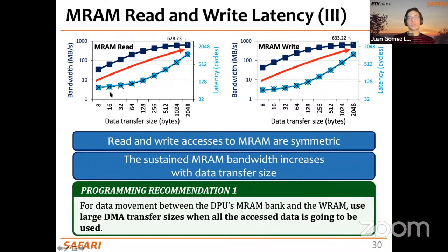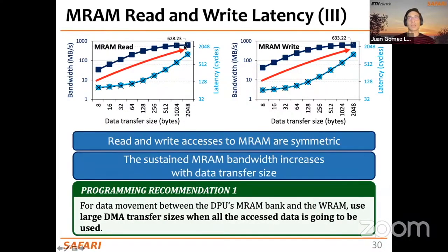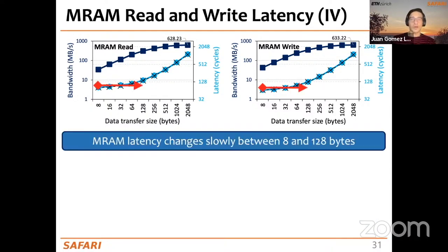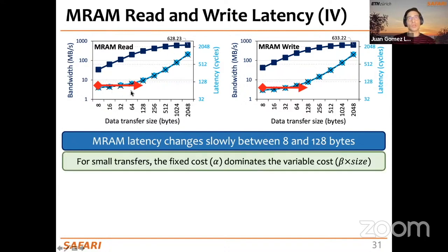Another observation is that MRAM latency is pretty flat between 8 and 128 bytes, because for small transfers the fixed cost α dominates the variable cost β×size. A programming recommendation: since the difference in latency between bringing 8 bytes versus 128 bytes to WRAM is so small, it may make sense to bring 128 bytes — after using the first 8 bytes, the remaining 120 bytes are already in WRAM and can be reused.